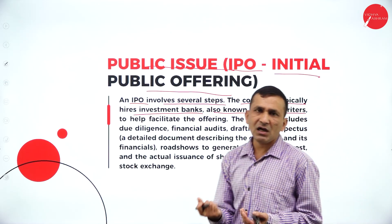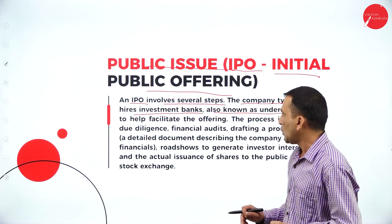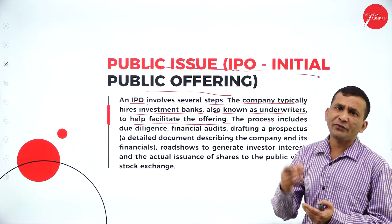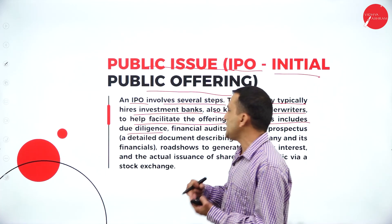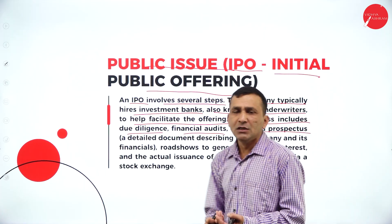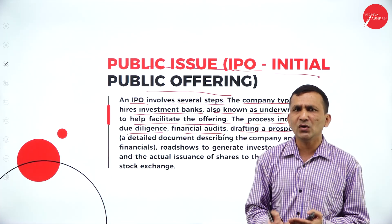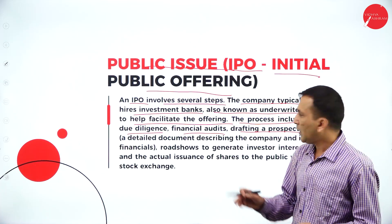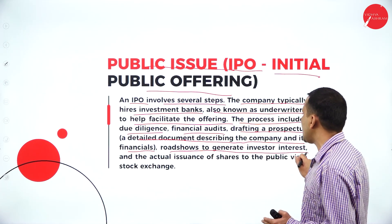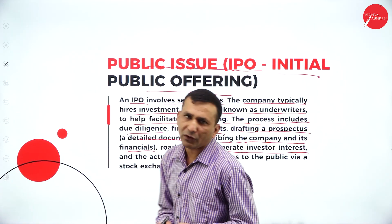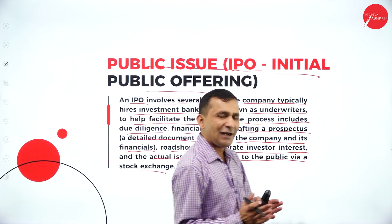The investment bank is also known as underwriters. Underwriters are not waiting for individual investors — the underwriter purchases in bulk quantity to help facilitate the offer, because the company wants finance support. So with the help of the underwriter, they are doing the transaction. The process includes due diligence, financial auditing, and drafting a prospectus — a detailed document describing the company and its financials, including face value, lot size, and all terms and conditions. Roadshows are done to generate investor interest and create awareness. And then actual issuance of shares to the public via stock exchange — majorly in India, Bombay Stock Exchange and National Stock Exchange.